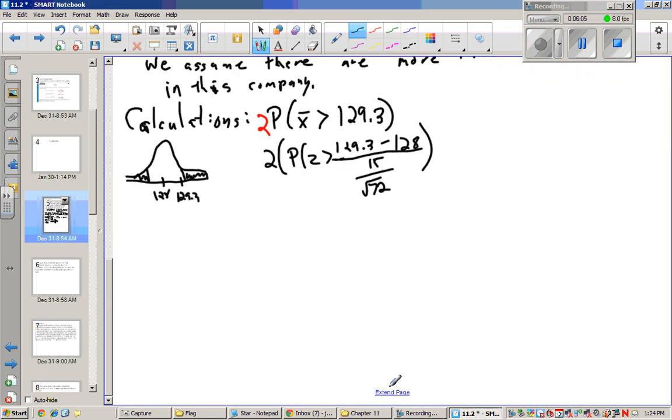So at this point, we take out our trusty calculator and we take 129.3 minus 128, and then I take 15 over the square root of 72. And 1.3 divided by that, we get a z-score greater than 0.7354.